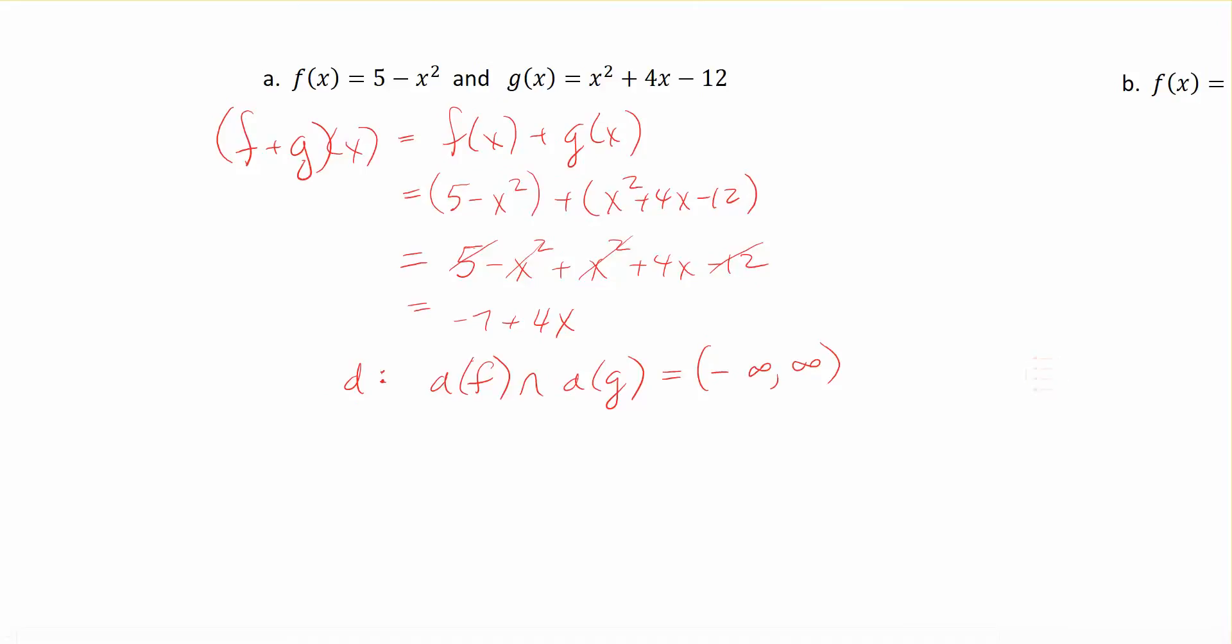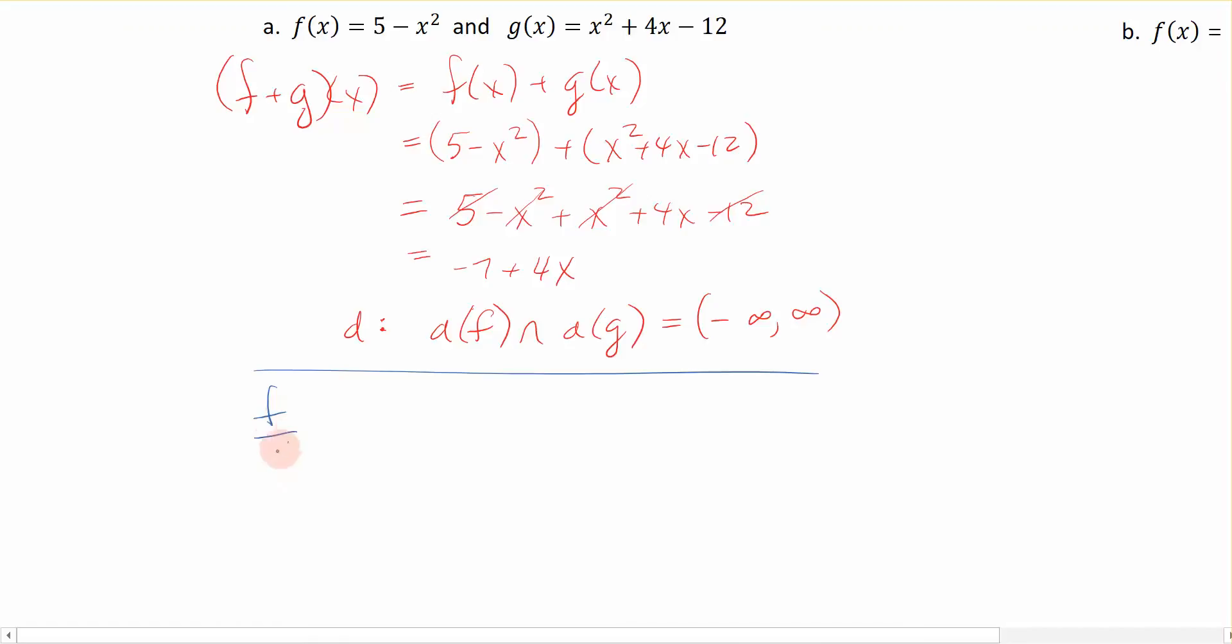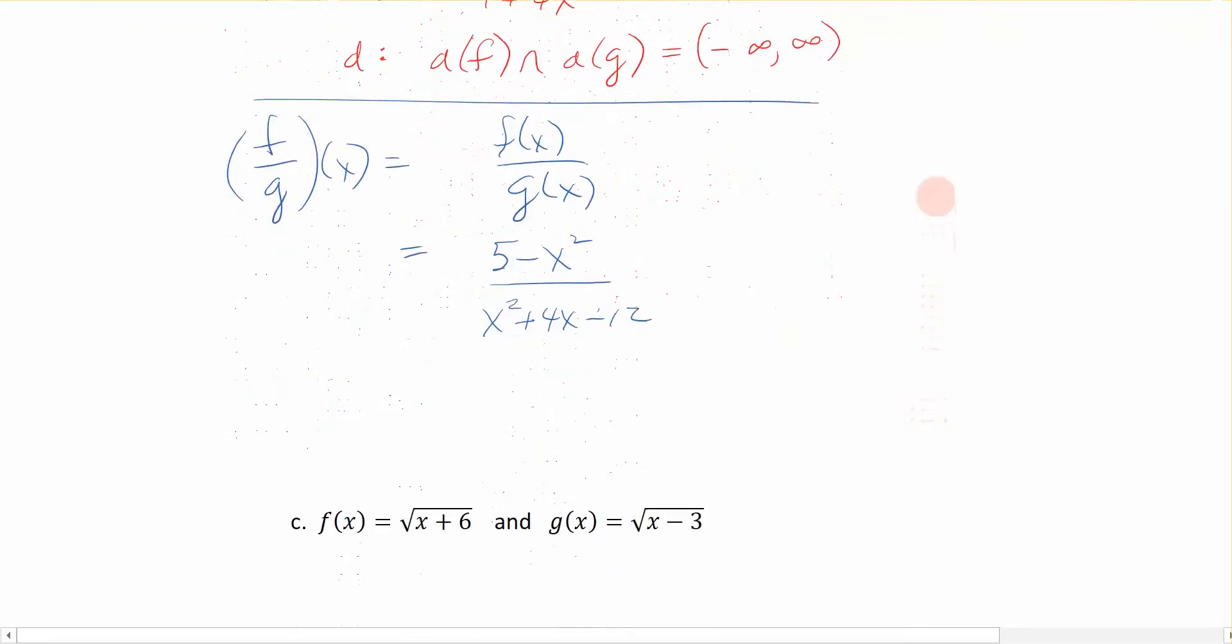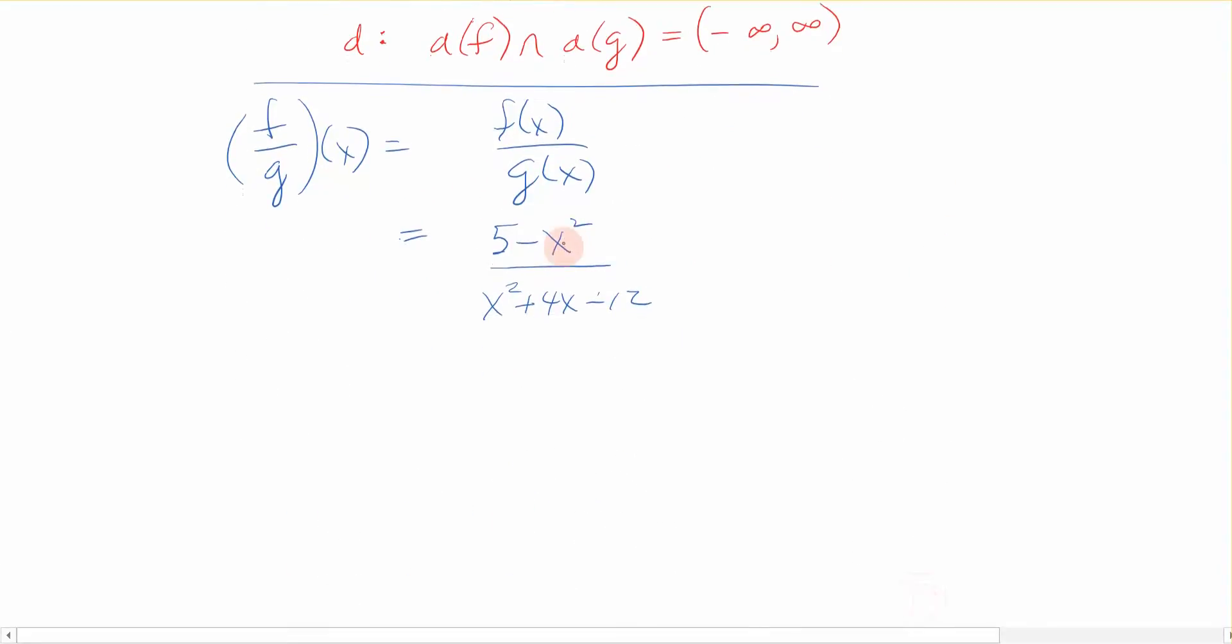Now, what do we do when we want to find the quotient? Remember, finding the quotient is just division. So f divided by g of x. And to handle that, we just take f of x divided by g of x. So my f of x function is 5 minus x squared. My g of x function is x squared plus 4x minus 12. And all I really did was write these two polynomials as division or in a fraction like this.